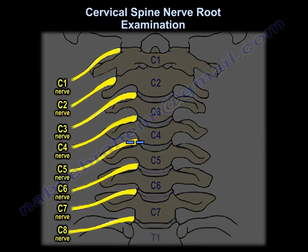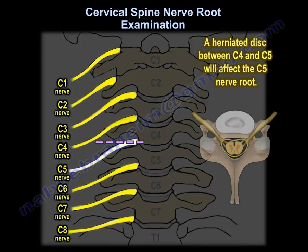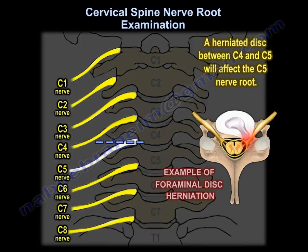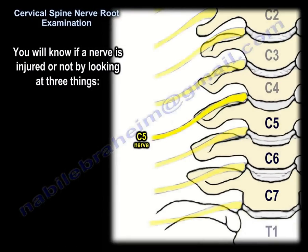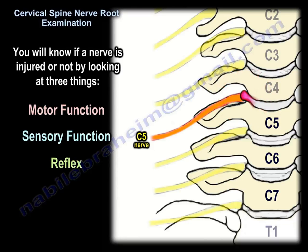If you have a herniated disc between C4 and C5, that will affect the C5 nerve root. You can determine if a nerve is injured by looking at three things: the motor function, the sensory function, and the reflex.